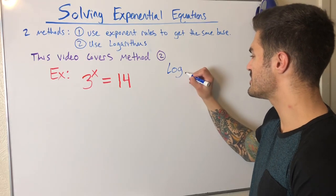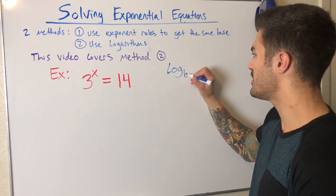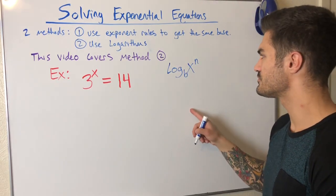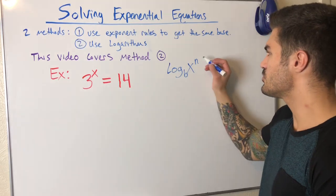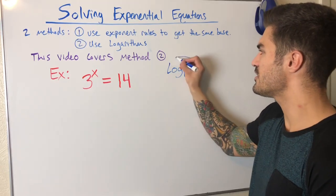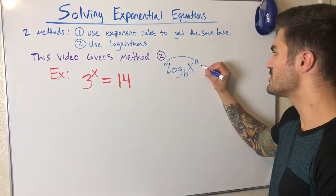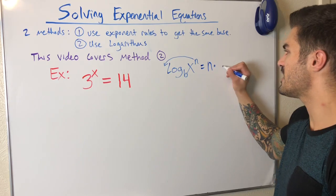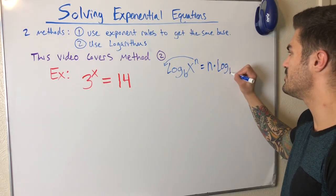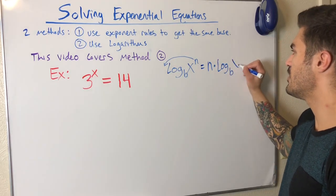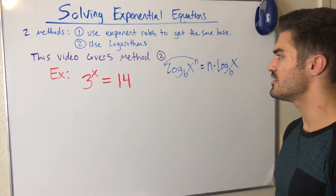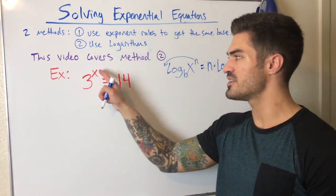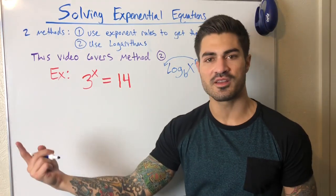We have a key property of logarithms: if I have log base B of X to some power n, that exponent n can come out in front and multiply. So this equals n times log base B of X.